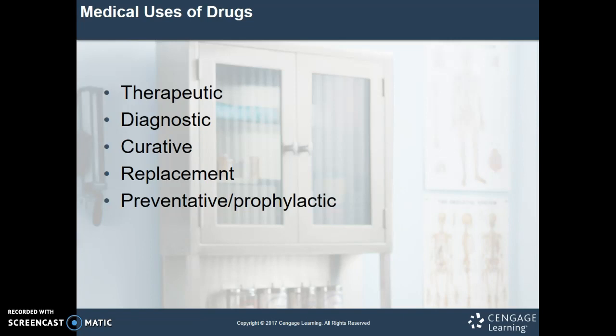Another diagnostic drug would be cosintropin, which is injected into the patient to determine if they have an adrenal gland dysfunction. There aren't a ton of diagnostic drugs, but there are several. Curative medications help remove an agent that causes a disease — a prime example is antibiotic therapy, which can destroy bacteria and do away with the infection. Replacement agents are used to replace chemicals that are deficient or missing in the body, such as insulin, thyroid hormone, vitamins, and minerals.